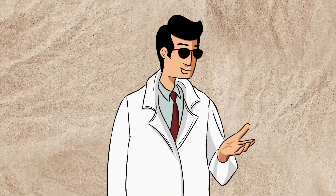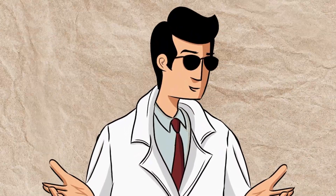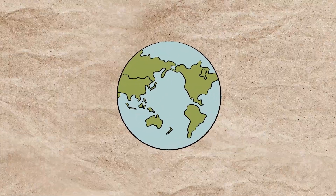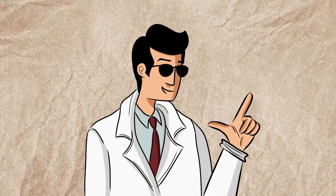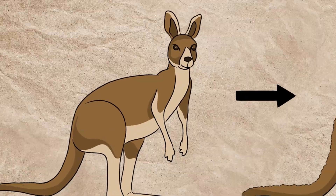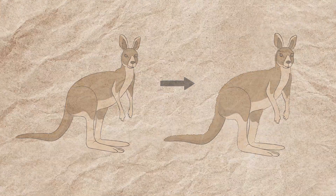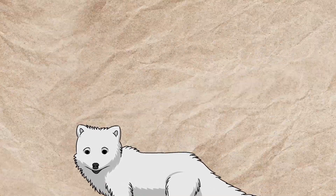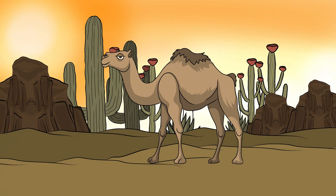As the continents continue to drift, life on Earth will face new challenges and opportunities, leading to various adaptations. For example, if the continents collide to form a supercontinent like Amasia, new mountain ranges could rise, altering weather patterns. This could create areas with drastically different climates, such as harsher winters or hotter, drier summers. Species living in these environments might develop thicker fur or more robust insulation to handle the cold, similar to how modern animals like Arctic foxes have evolved for cold climates. In drier regions, plants and animals might evolve to conserve water more efficiently, much like cacti in deserts or camels, with their ability to survive in extreme heat and drought.